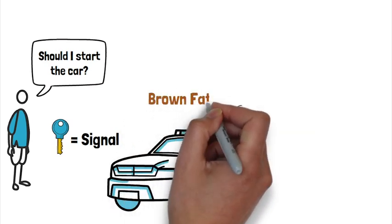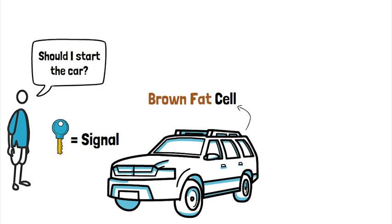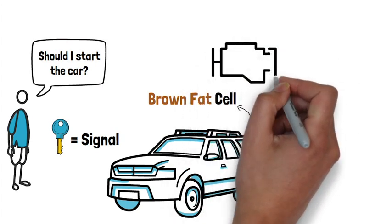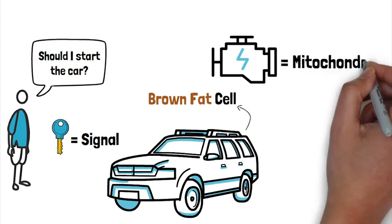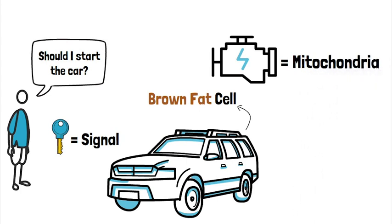The vehicle represents the brown fat cell, and the car engine represents the mitochondria, which burns the fuel to drive the energy for our unit.